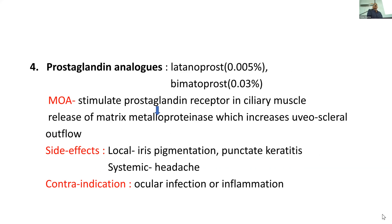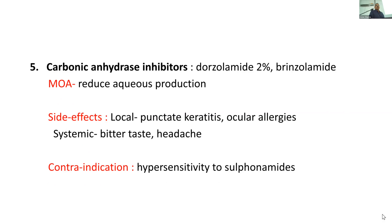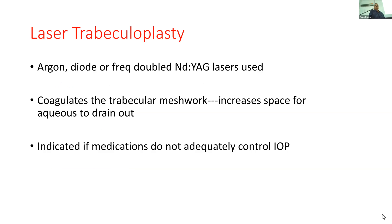Prostaglandin analogs are a newer group of drugs that increase uveoscleral outflow — very effective, used once a day — but have side effects: local iris pigmentation, punctate keratitis, enlargement of the cilia, and periocular pigmentation. They cannot be used in uveitic patients or in the perioperative period as they cause inflammation. Carbonic anhydrase inhibitors — dorzolamide, brinzolamide — reduce aqueous production. Side effects include ocular allergies, metallic taste, headache, and cannot be used in sulfonamide hypersensitivity. Laser trabeculoplasty using argon or diode coagulates the trabecular meshwork to increase space for aqueous drainage, but the effect diminishes over time.